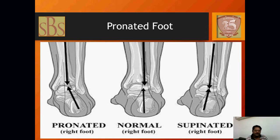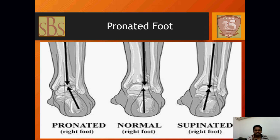A pronated foot means the calcaneum deviates towards the medial side, and you see a flat medial longitudinal arch. The center diagram shows a normal foot with the calcaneum straight, the tibia articulating well. The supinated foot — pes cavus — causes the patient to bear more weight on the lateral border of the foot. In the pronated foot, the patient bears all weight on the medial side.